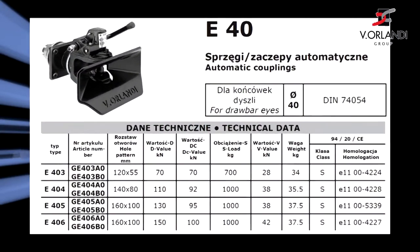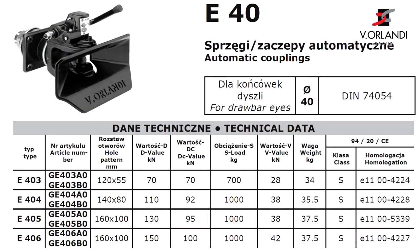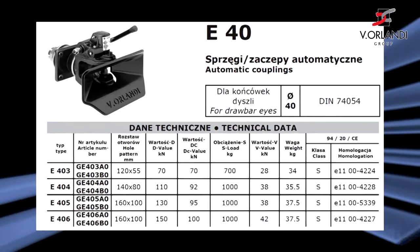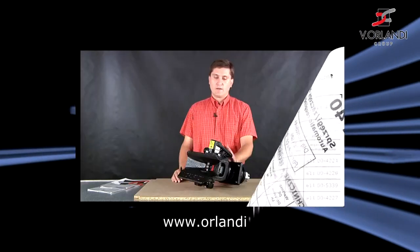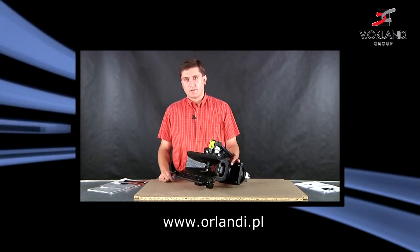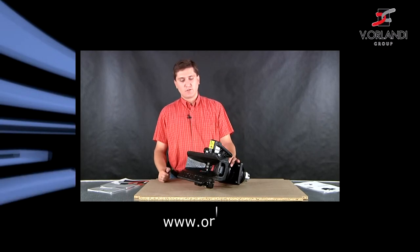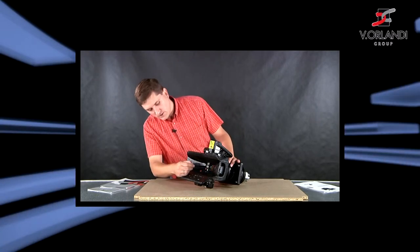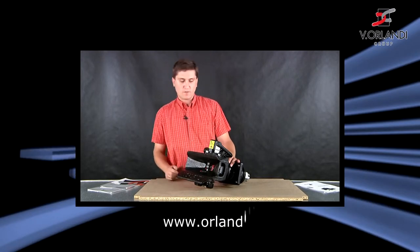Wyjaśnię również główne zalety sprzęgów o średnicy 40 mm naszej firmy V-Orlandi. Pierwszym podstawowym parametrem doboru sprzęgu jest jego średnica sworznia. Średnica tego zaczepu to 40 mm.